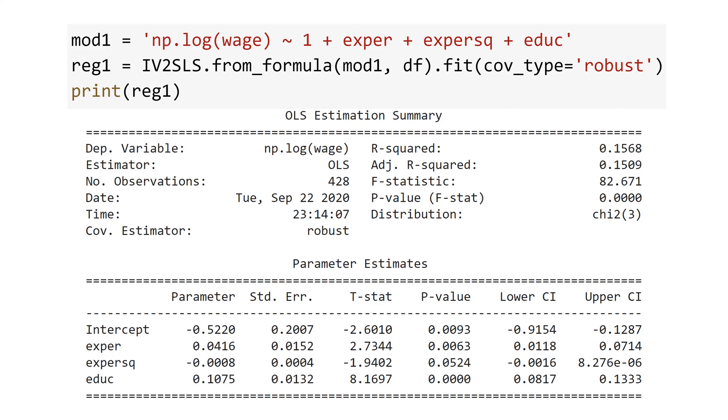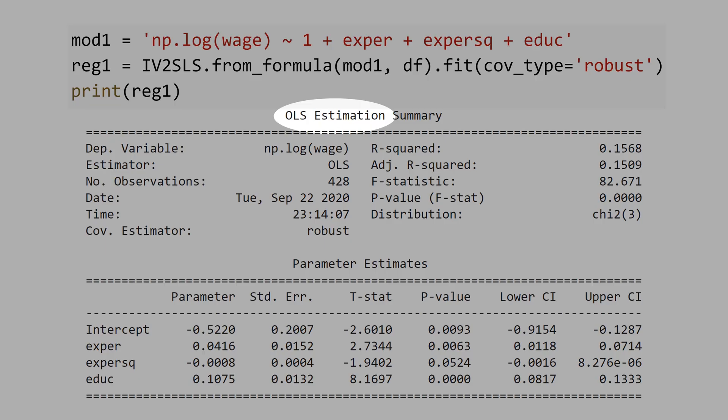And here is the result. See the title, ordinary least square estimation. The specified model is the ordinary least square. If you don't specify any instrumental variable, the IV two-step least square command will run ordinary least squares.